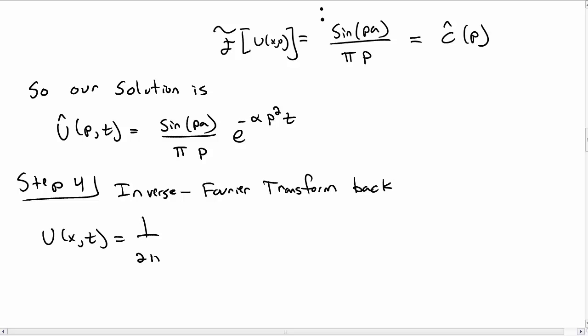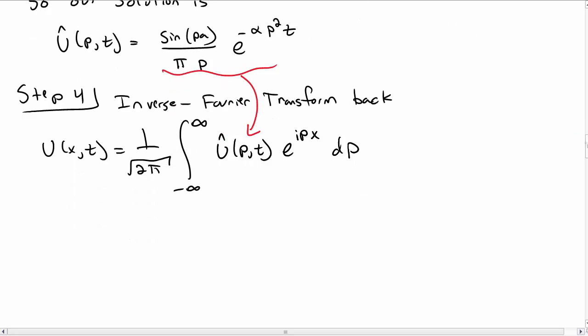So u of x and t is then the inverse Fourier transform. So that's the negative infinity to infinity integral of u hat of p comma t, e to the i px dp. Now we're integrating over p.